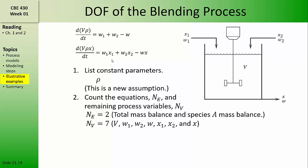Be careful to distinguish among variables that are different quantities but have similar identities using subscripts. We have three different flow rates: W1, W2, and W. We also have three compositions: X1, X2, and X. Those all represent different quantities and so they should be counted separately.